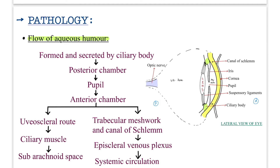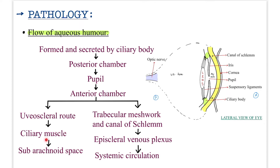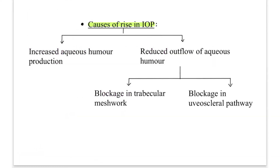From the anterior chamber, there are two drainage routes: the uveoscleral route and the trabecular meshwork with the canal of Schlemm. The uveoscleral route passes between the uvea (the middle layer of the eye) and the sclera, leading to the ciliary muscle and subarachnoid space. Via the trabecular meshwork and canal of Schlemm, fluid drains to the episcleral venous plexus and then into systemic circulation. The cause of raised IOP is either increased aqueous humor production or reduced outflow — due to blockage in the trabecular meshwork or the uveoscleral pathway.